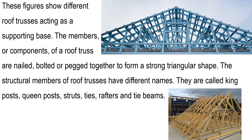The members or components of a roof truss are nailed, bolted or pegged together to form a strong triangular shape. The structural members of roof trusses have different names. They are called king posts, queen posts, struts, ties, rafters and tie beams.